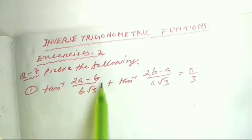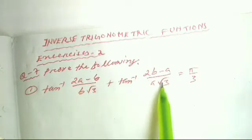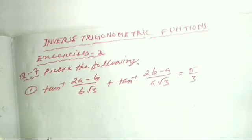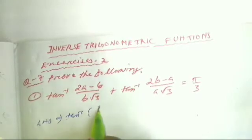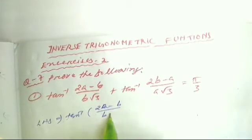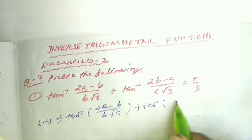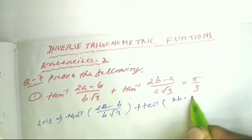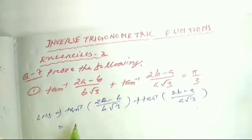Question number seven: prove that tan⁻¹(2a−b)/(b√3) + tan⁻¹(2b−a)/(a√3) = π/3. Taking LHS: tan⁻¹(2a−b)/(b√3) + tan⁻¹(2b−a)/(a√3). Now we apply the tan⁻¹x + tan⁻¹y formula.